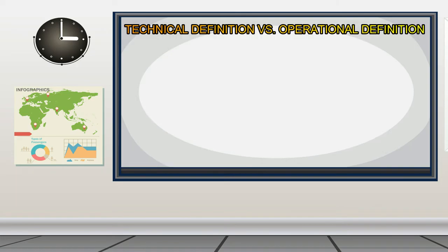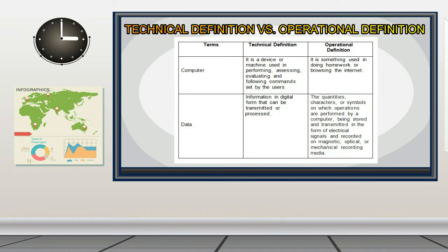What is the difference between technical definition and operational definition? Let's take a look at the table on the board. If we define 'computer' using technical definition, it means it is a device or machine used in performing, assessing, evaluating, and following commands set by the users. Using operational definition, it means it is something used in doing homework or browsing the internet. If we define 'data' using technical definition, it means information in digital form that can be transmitted or processed. Using operational definition, it means the quantities, characters, or symbols on which operations are performed by a computer, being stored and transmitted in the form of electrical signals and recorded on magnetic, optical, or mechanical recording media.